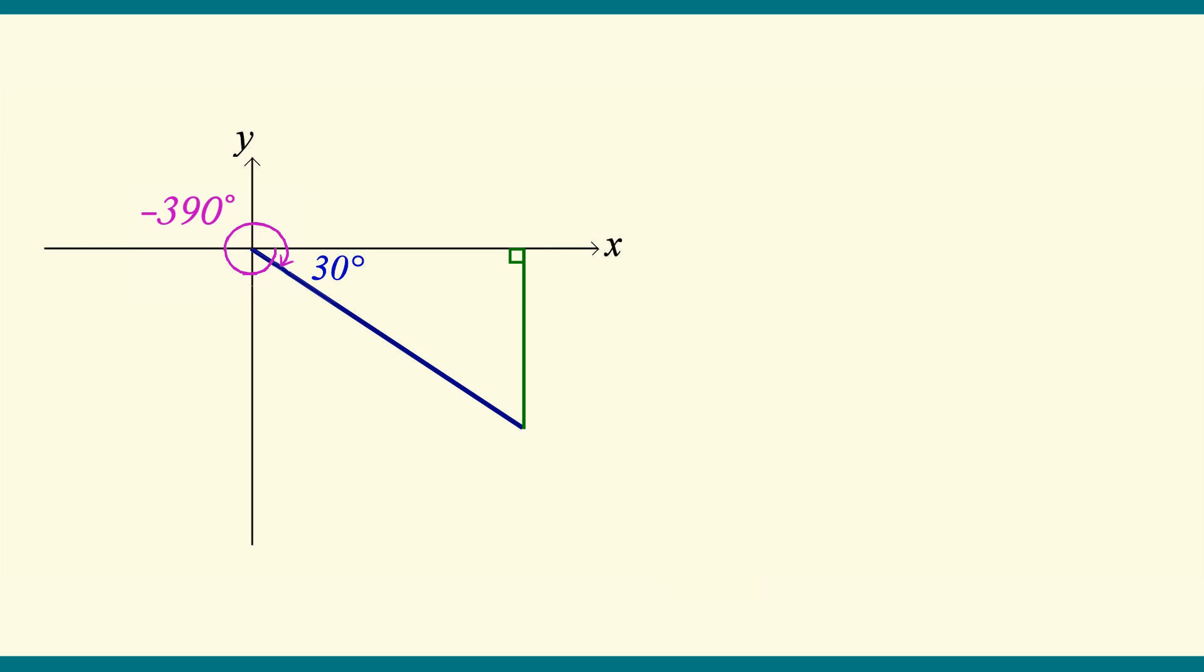We all know by now that the shortest side is 1. That's opposite the 30 degree angle. The hypotenuse is 2, and the adjacent side here is square root 3.